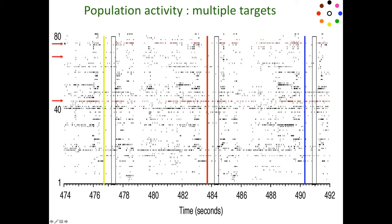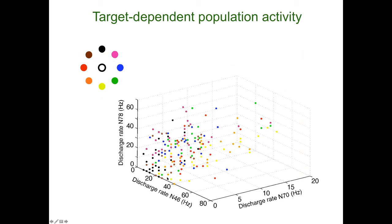So I pick three random neurons: neuron 46, which fires at an intermediate rate; neuron 70, which has a very high firing rate; and neuron 78, which has a very low firing rate. Every reach gives a point in this three-neuron space during the 350-millisecond window, and we color the points according to the target. We see nothing meaningful here — this arbitrary three-dimensional space chosen by picking random neurons doesn't give us much information about what's happening in the population.